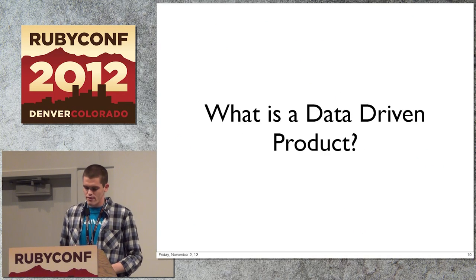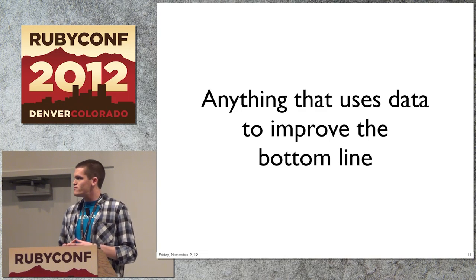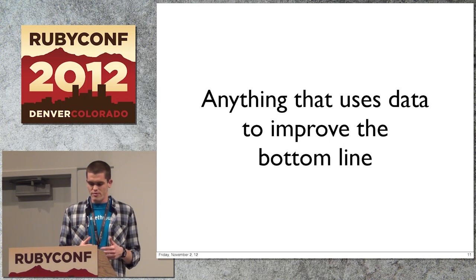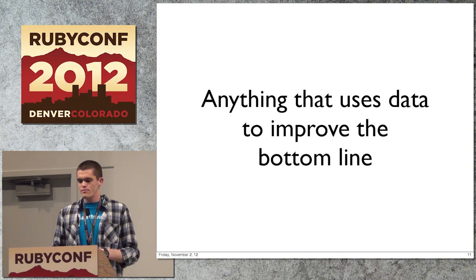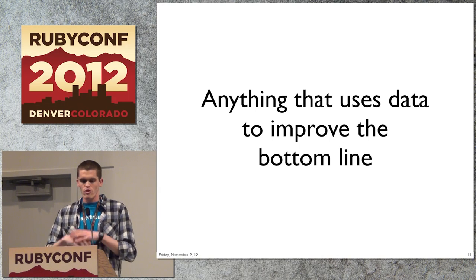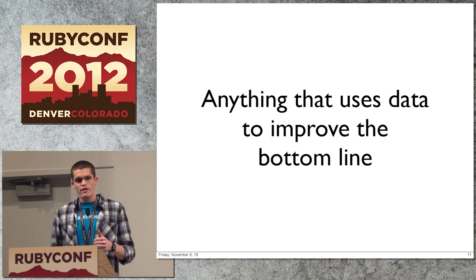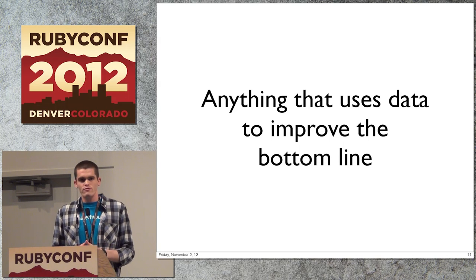So what is a data-driven product? It's really anything that uses data to improve the bottom line of your business. It could be a standalone product — where the whole company just does data — like Boundary, Mixpanel, or Google to a certain extent. But it's more interesting to look at ways you can incorporate data-driven products into a larger company offering. Examples might be ad targeting, product recommendations like Amazon, or information aggregation and filtering — like a news website showing which articles you're likely to want to read.